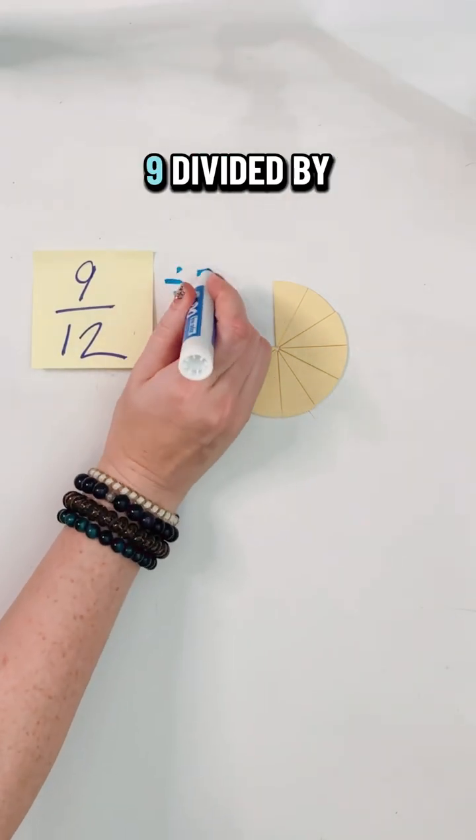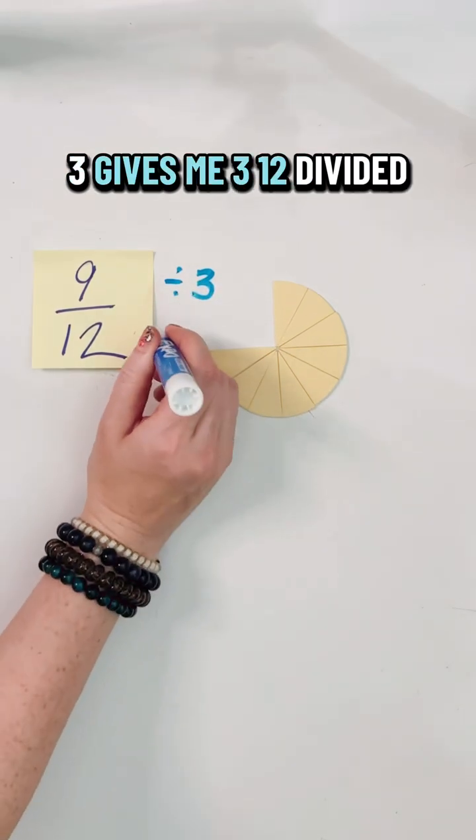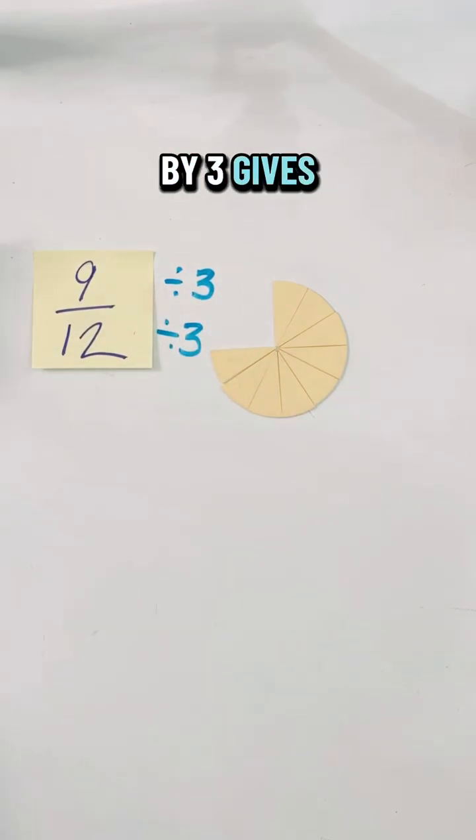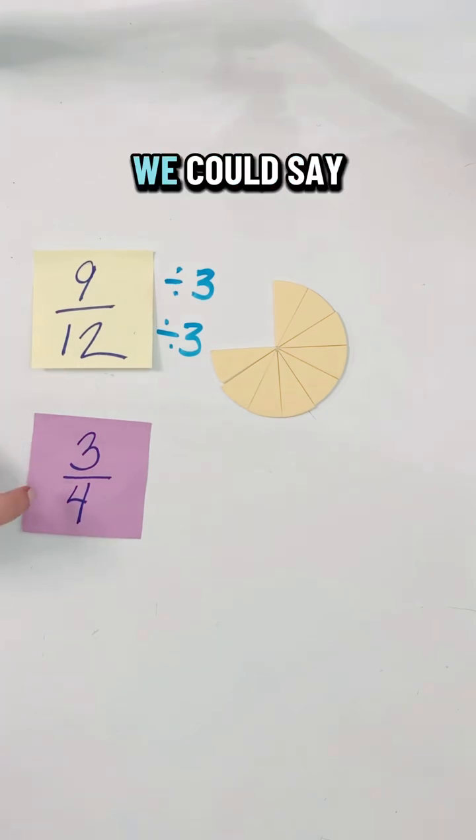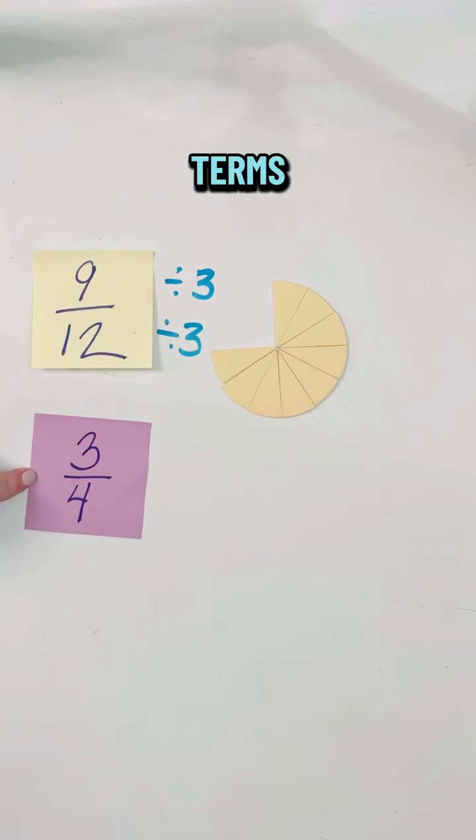Nine divided by three gives me three. Twelve divided by three gives me four. So nine twelfths is equivalent to three fourths. We could say that three fourths is the fraction written in simplest terms.